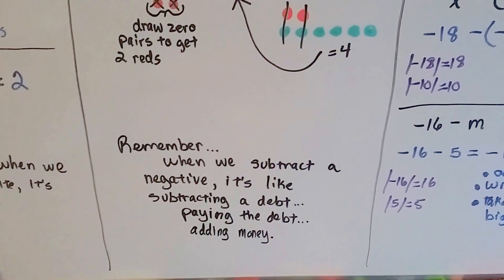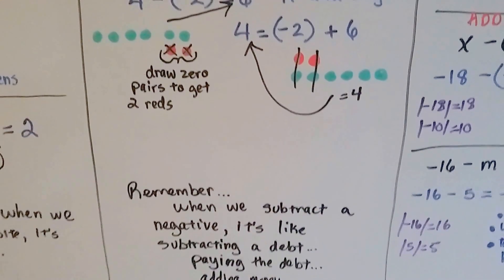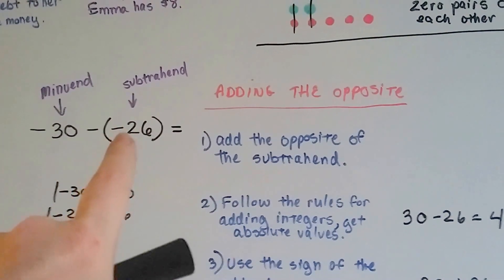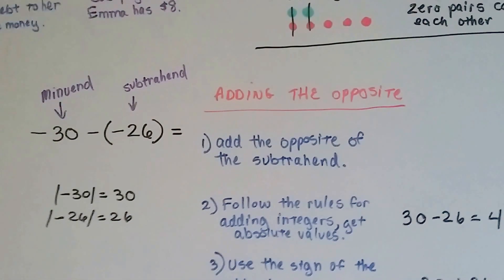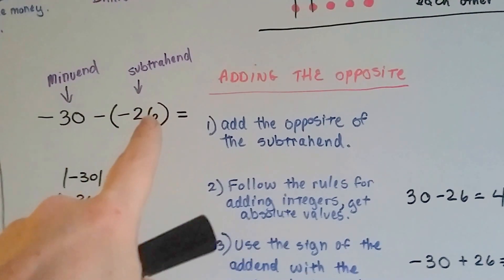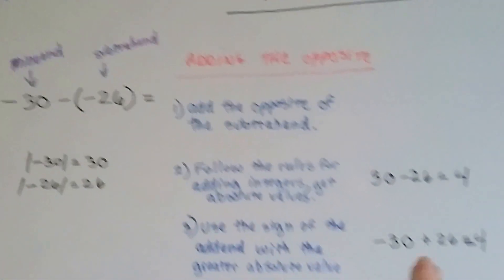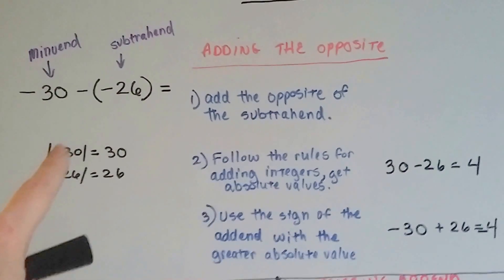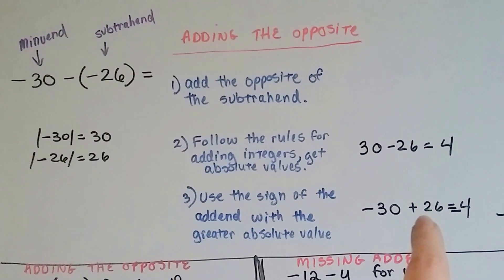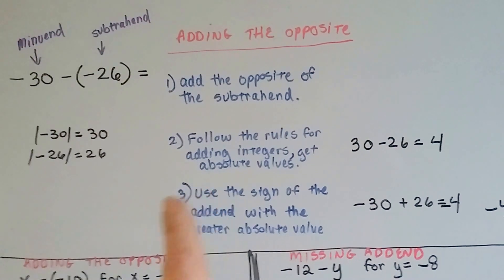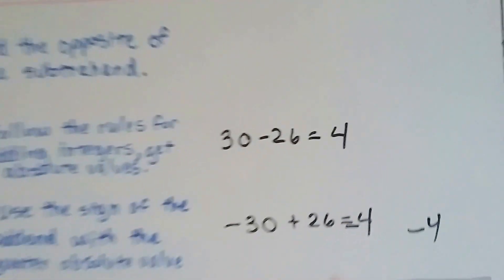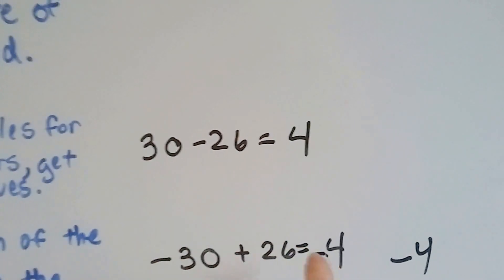So when we subtract a negative, it's like subtracting a debt — it's like paying that debt, and we end up adding money. It flips. Here's another example using adding the opposite: we've got negative 30 minus a negative 26. This is the minuend, this is the subtrahend, and the answer is called the difference. We're going to add the opposite of the subtrahend, so instead of subtracting a negative 26, we're going to add a positive 26. We use the absolute values — just how far away they are from zero — follow the rules for adding integers, and use the sign of the addend with the greater absolute value. This equals negative 4.